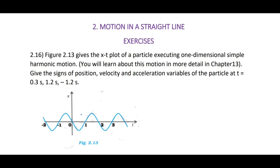Hello students. In this video we are going to discuss problem 2.16. Figure 2.13 gives the x-t plot of a particle executing one-dimensional simple harmonic motion. You will learn about this motion in more detail in chapter 13. Give the signs of position, velocity and acceleration variables of the particle at t equal to 0.3 seconds, 1.2 seconds, and minus 1.2 seconds.